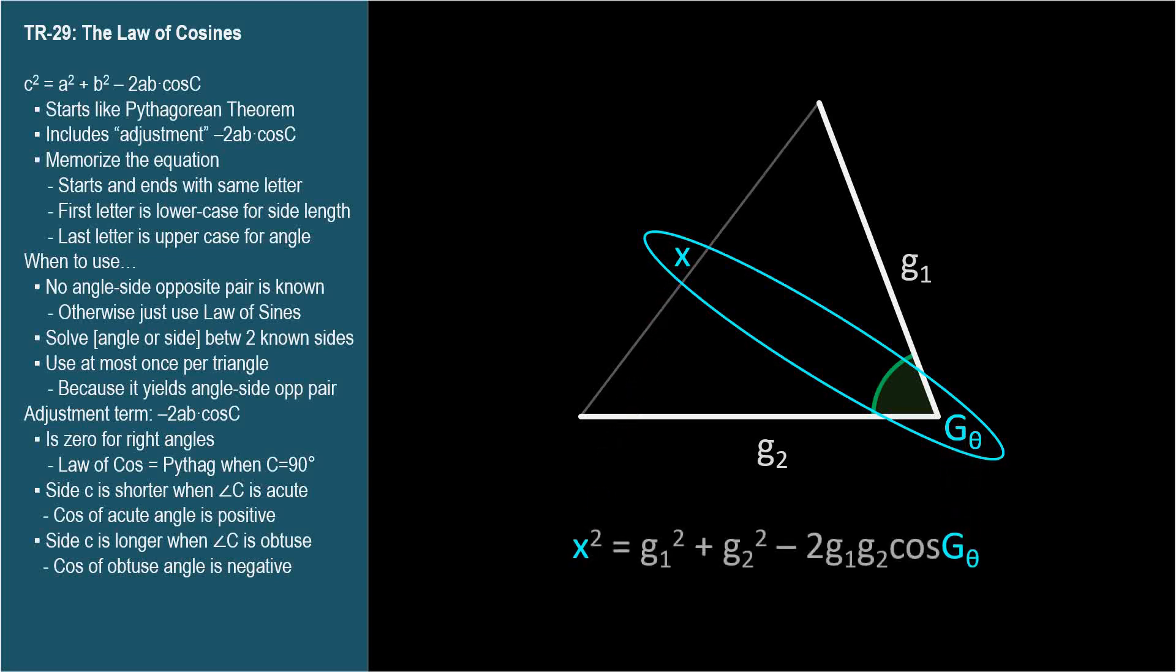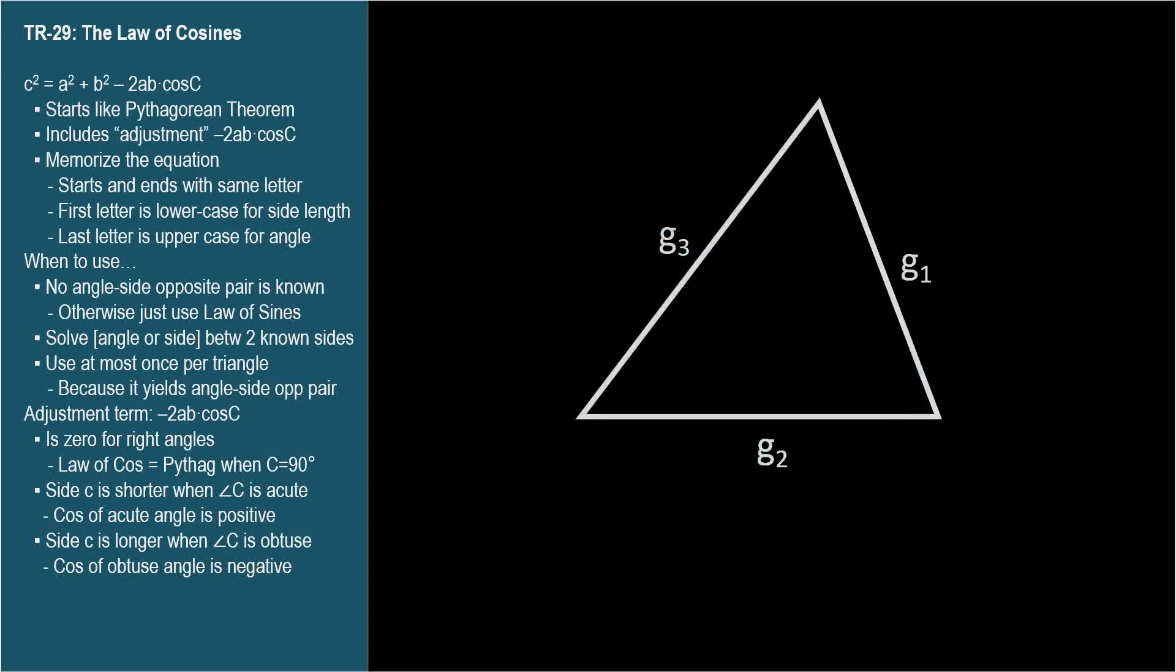Here we're given three sides, so we have no angle side opposite pair. We simply choose an angle to solve using the Law of Cosines with this opposite side. I chose this one and called it theta sub 2 because it's opposite given 2 or g sub 2. Write the Law of Cosines equation with these two at the beginning and end and do the algebra to solve for theta sub 2. Then you'll have an angle side opposite pair.